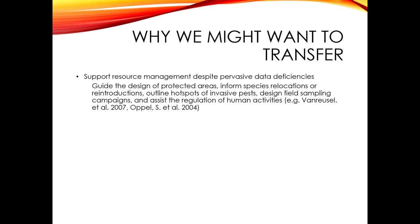So why might we want to transfer models? We need to transfer models all the time, and a lot of the time we don't have sufficient data to make custom models to understand the distribution of species. This is particularly true in the marine environment, the vast majority of which has not been sampled, but even in terrestrial and aquatic environments there are many data deficiencies. We still need to support resource management such as guiding the design of protected areas, or informing where we may want to do reintroductions — for example, a species that used to live in the UK but is now only found on mainland Europe.